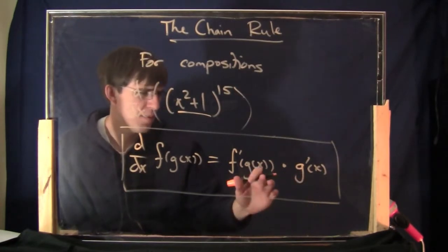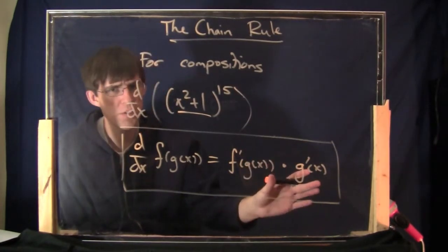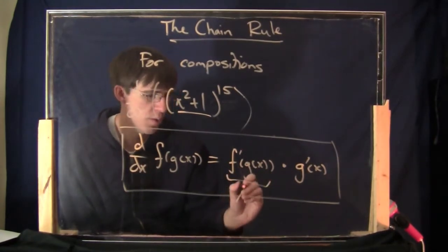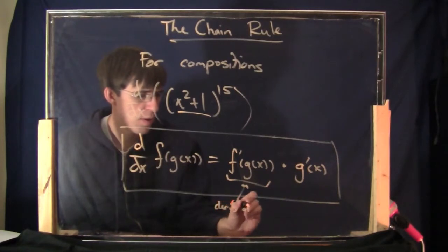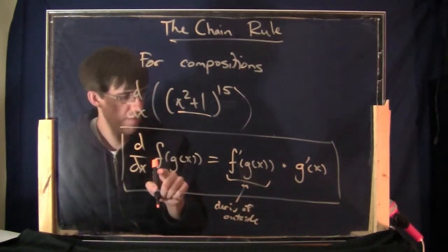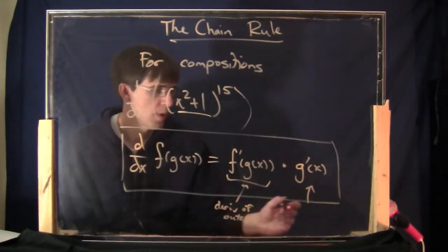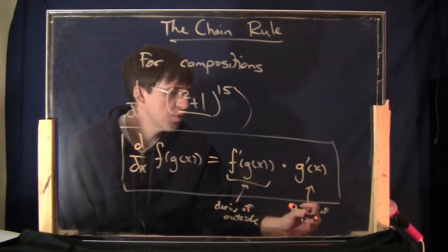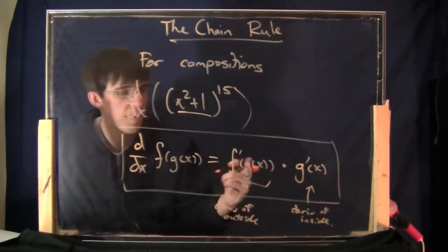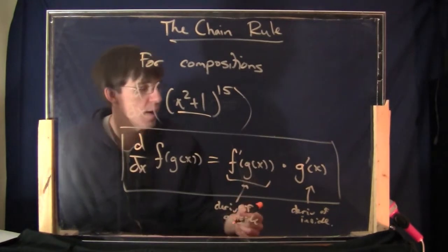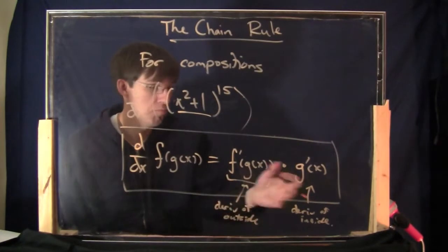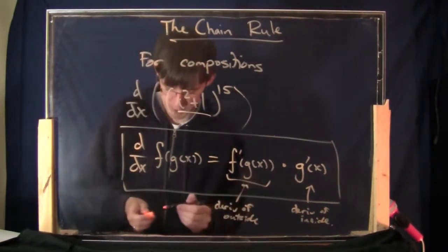I don't know if it's actually helpful to memorize this as a formula. In words: this is the derivative of the outside — F is the outside — and here is the derivative of the inside, and you multiply them together. So you take the derivative on the outside, leave the same thing inside, and then multiply by the derivative on the inside. Let's just try a bunch of examples.